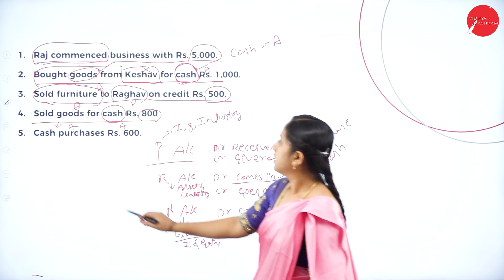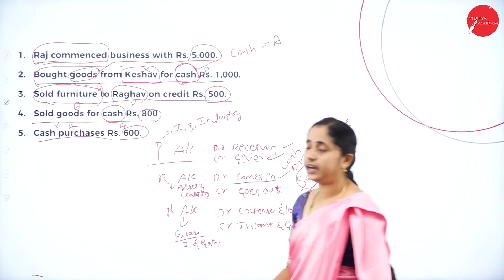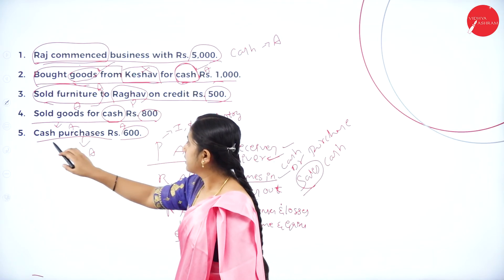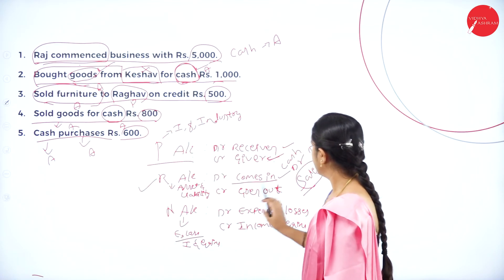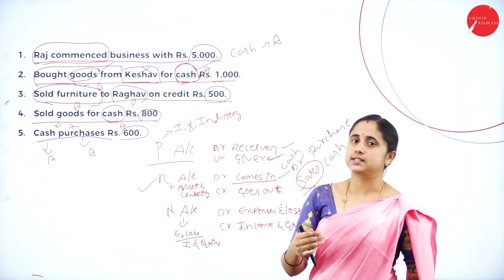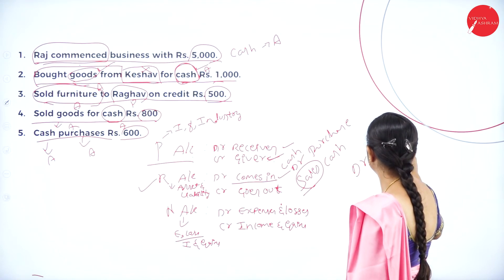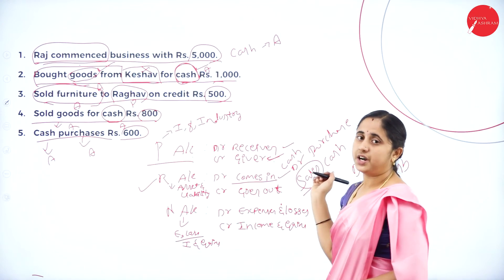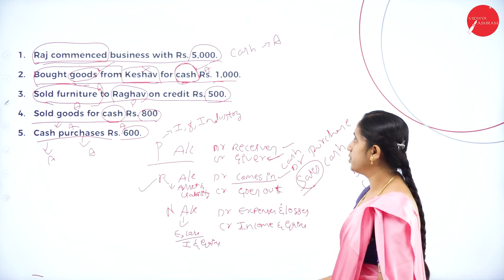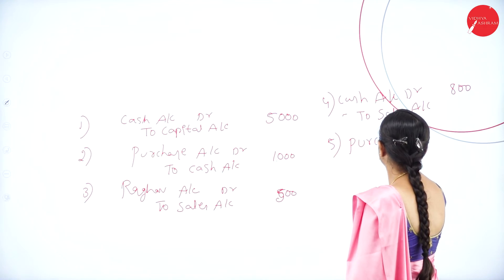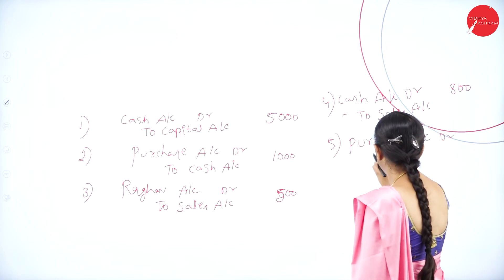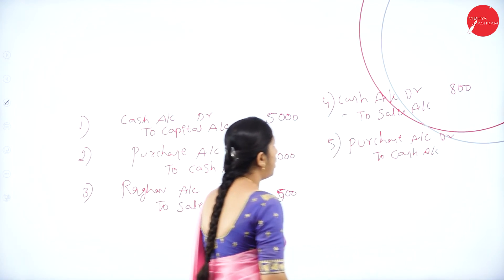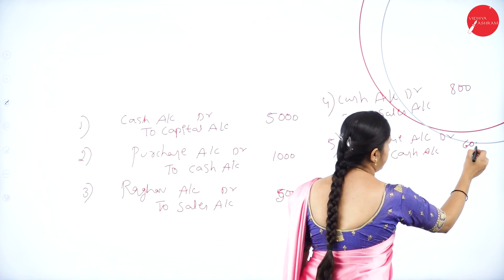Last one: cash purchase of rupees 600. Here, you made a purchase for cash of rupees 600. Purchase of goods is an asset; cash is also an asset. Apply the real account rule: debit what comes in, credit what goes out. When you made a purchase, the goods is coming in — debit purchase. Cash is going out — credit cash. Entry: Purchase Account Dr. to Cash Account, rupees 600.